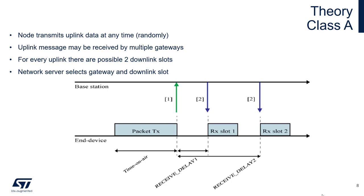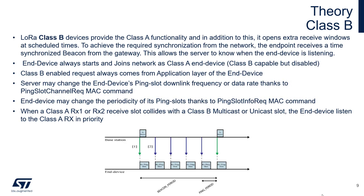If there is no over-the-air activity during the first RX slot, the node goes to sleep. Then after receive delay 2 — in practice 2 seconds — it opens the second slot, then goes to sleep. The procedure then repeats.